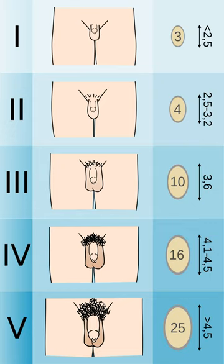Tanner 5, Breast reaches final adult size, areola returns to contour of the surrounding breast, with a projecting central papilla, 15+.